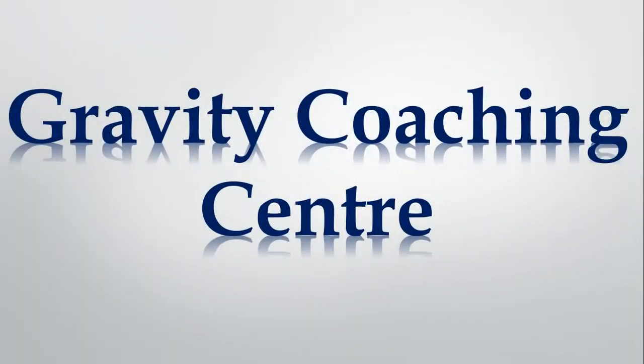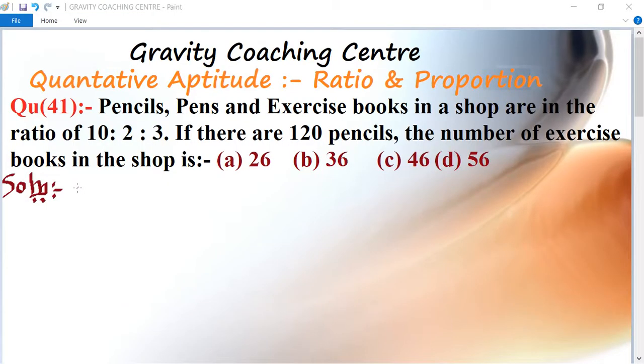Welcome to our channel Gravity Coaching Center, quantitative aptitude, chapter ratio and proportions, question number 41. Pencils, pens and exercise books in a shop are in the ratio of 10:2:3. If there are 120 pencils, the number of exercise books in the shop is what?